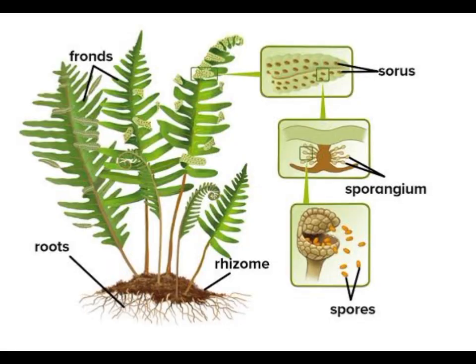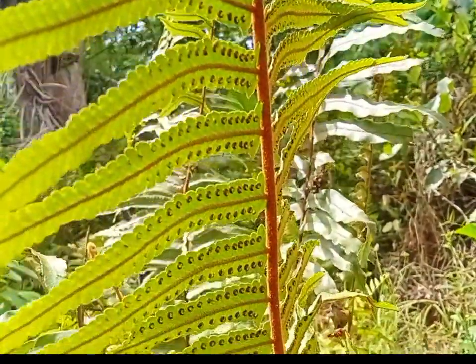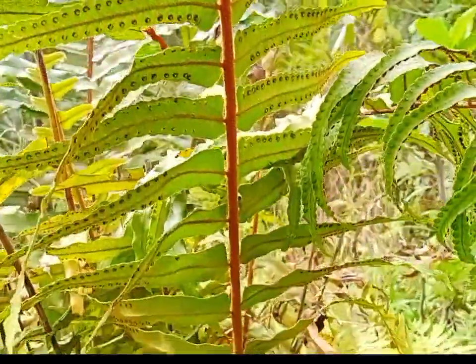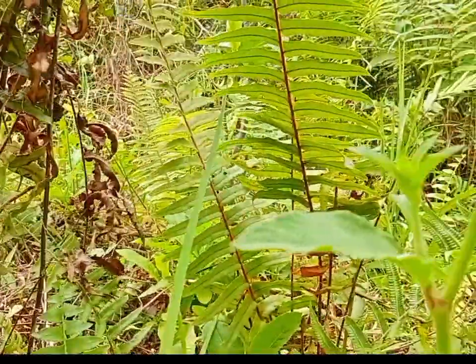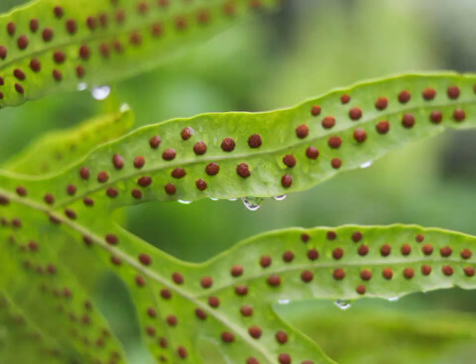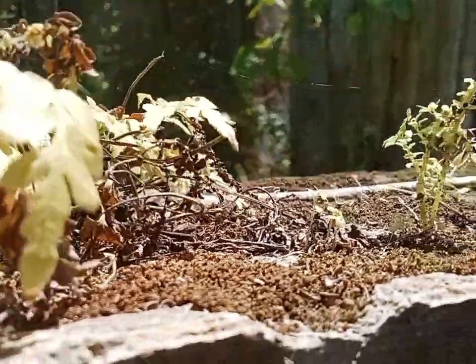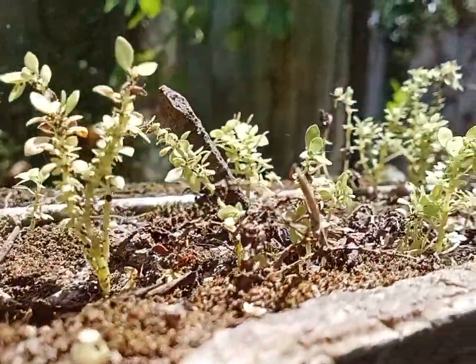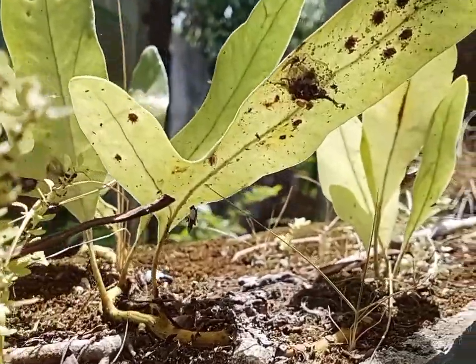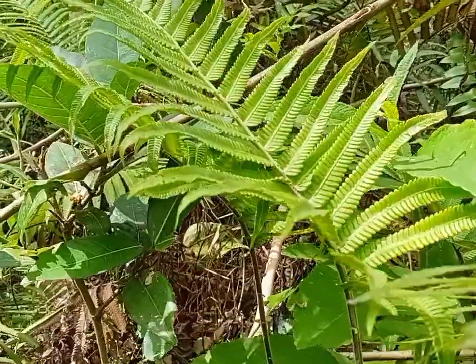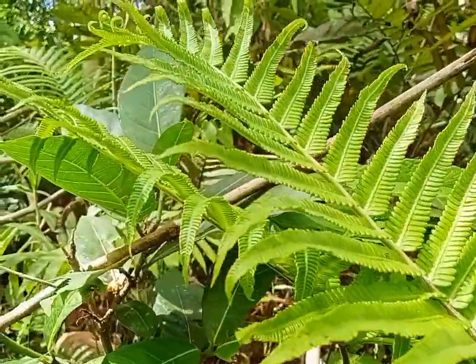Ferns have a vegetative structure called a rhizome, which is an underground stem. From the rhizome, ferns produce fronds responsible for photosynthesis. Asexual reproduction in ferns occurs through the growth of spores on the underside of mature fronds, protected by structures called sporangia. When sporangia mature, they release spores dispersed by wind or water. If a spore lands in a suitable environment with sufficient moisture, it germinates and develops into a small heart-shaped structure. This alternation of generations allows ferns to reproduce both sexually and asexually, increasing their chances of survival and dispersal.